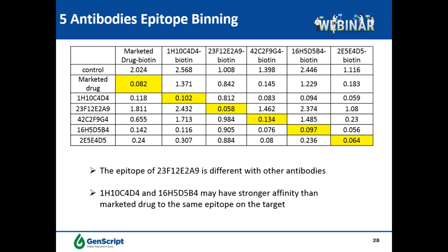If you remember from the previous ELISA EC50 and FACS blocking data, 23F12E2A9 also did not have ligand blocking activity, which is consistent with it binding to a different epitope. Additionally, clones 1H10C4D4 and 16H5D5B4 may have stronger affinity than the marketed drug for the same epitope, as demonstrated by their better competing ability, consistent with previous ELISA EC50 data. So far we have shared a case study of how functional antibody leads were identified by the hybridoma approach.